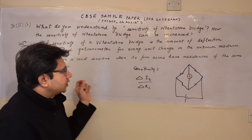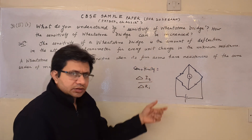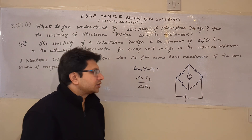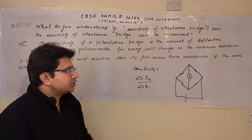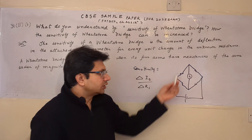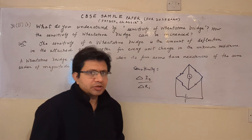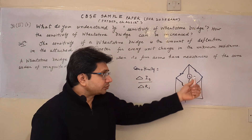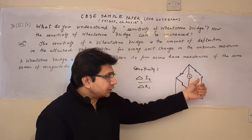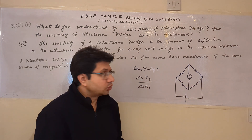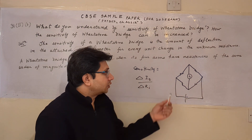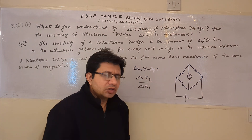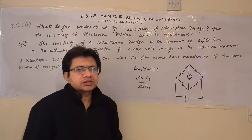To increase the sensitivity, we have to choose these resistances in such a manner that their orders of magnitude are nearly equal. For example, if we have a particular kilo-ohm resistance, then we have to choose the other resistances accordingly to match that order of magnitude.